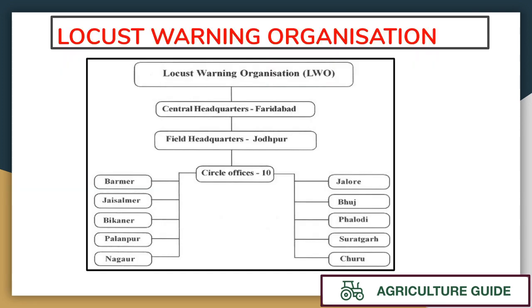There is a whole organization in the country for warning of locust attacks, known as the Locust Warning Organization. Its central headquarter is in Faridabad and its field headquarter is in Jodhpur. It has 10 circle offices.